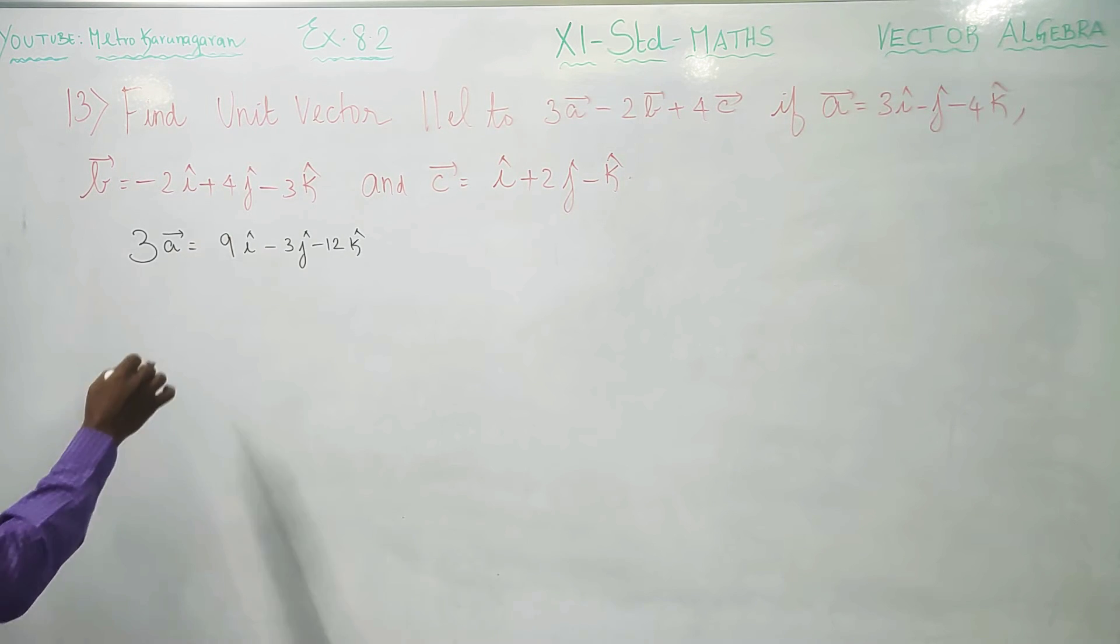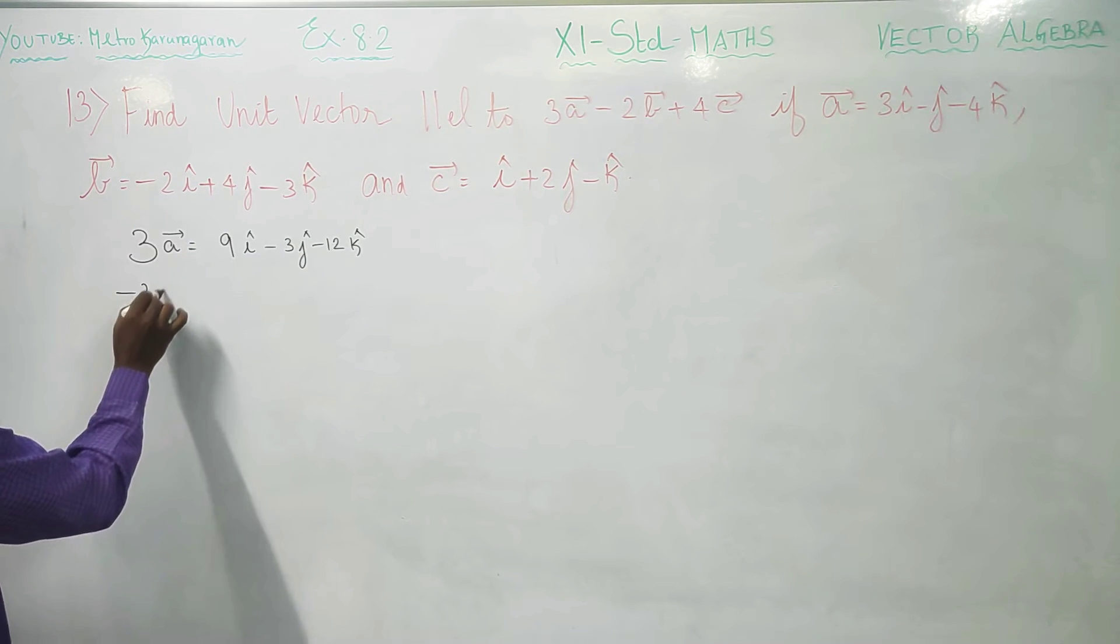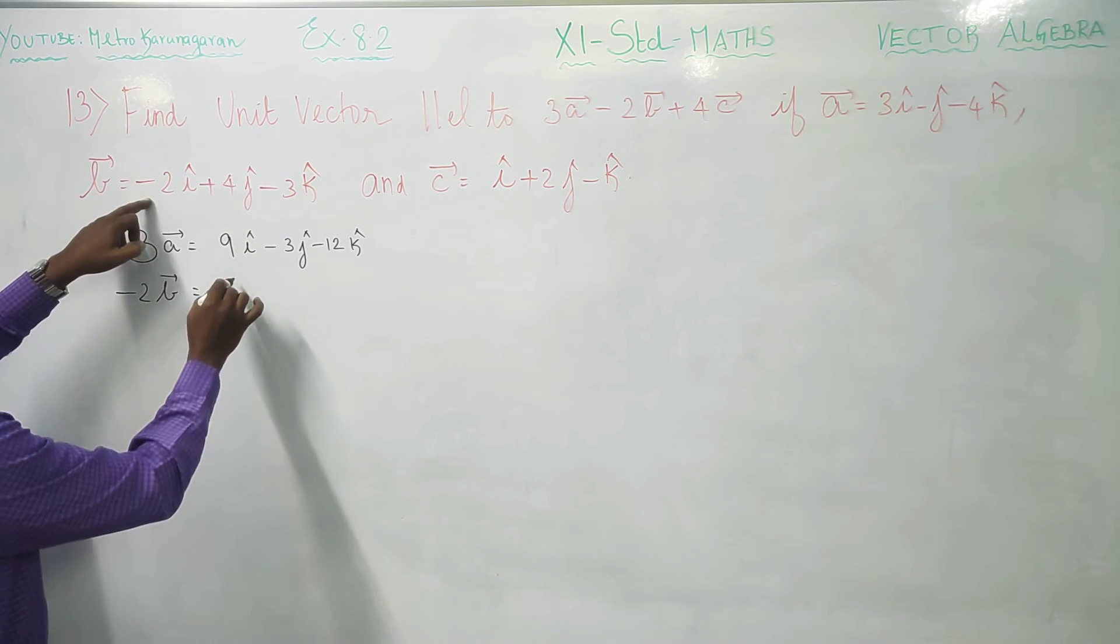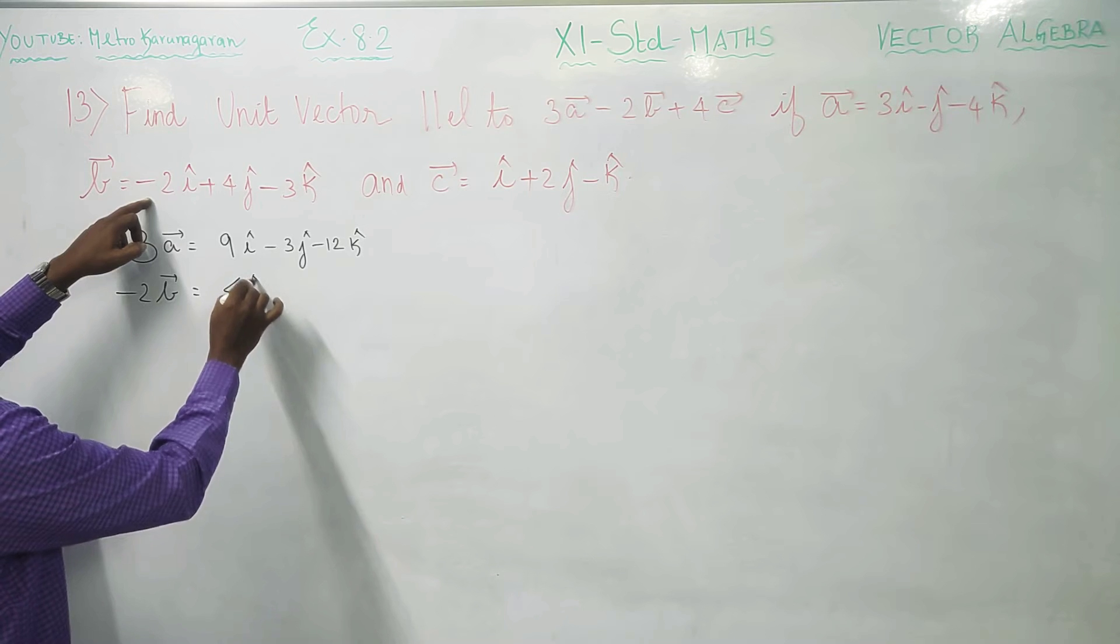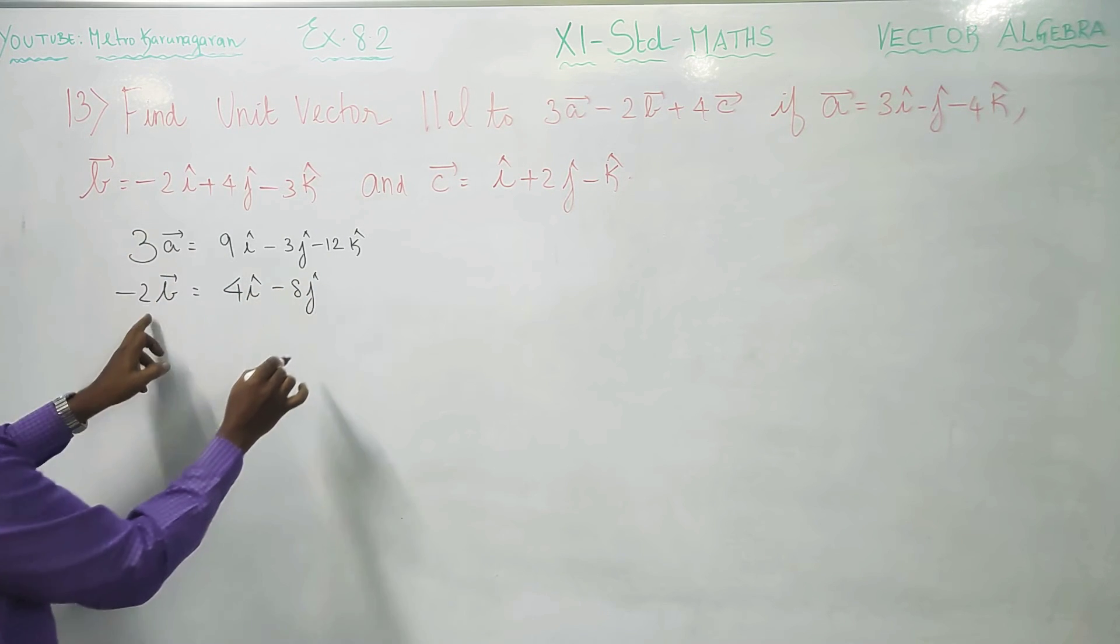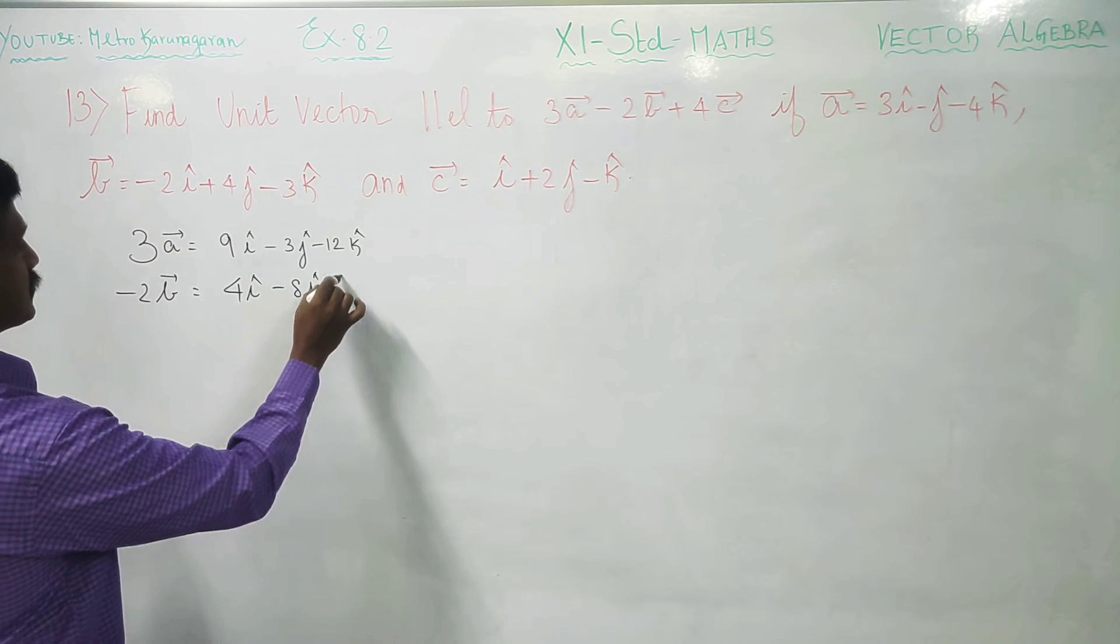After finishing this, next minus 2b vector. If you have full minus 2, then plus 4, this is minus 8. Minus into minus plus 3, 2s are 6k.